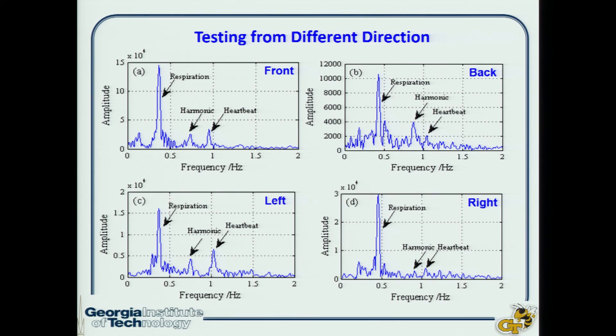Our system can detect both respiration and heartbeat signals from all four directions. However, when the detecting system is facing the back or right of the human subject, although the respiration signals are still very strong, the heartbeat signals are relatively weak. This means we need to develop more advanced signal processing methods to reliably detect the heartbeat rate. That is a general overview of the research we are conducting in my lab. If you're interested in any topic, I'd be glad to have a further discussion with you. Thank you.